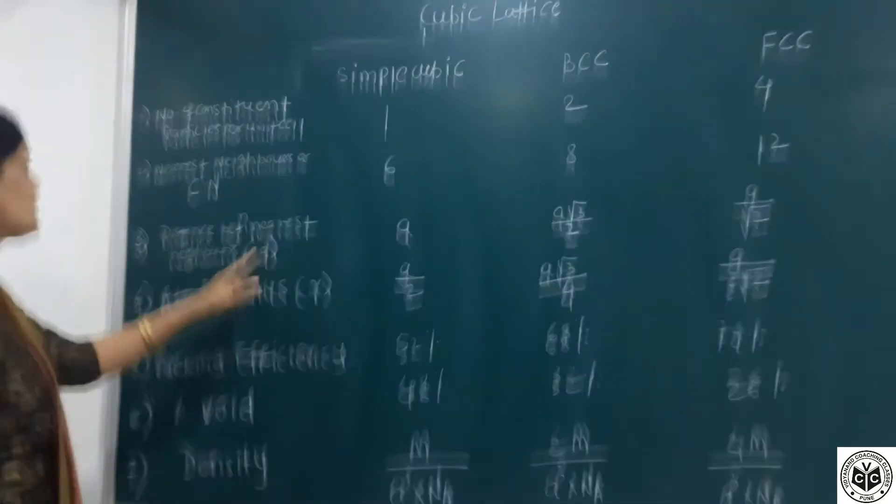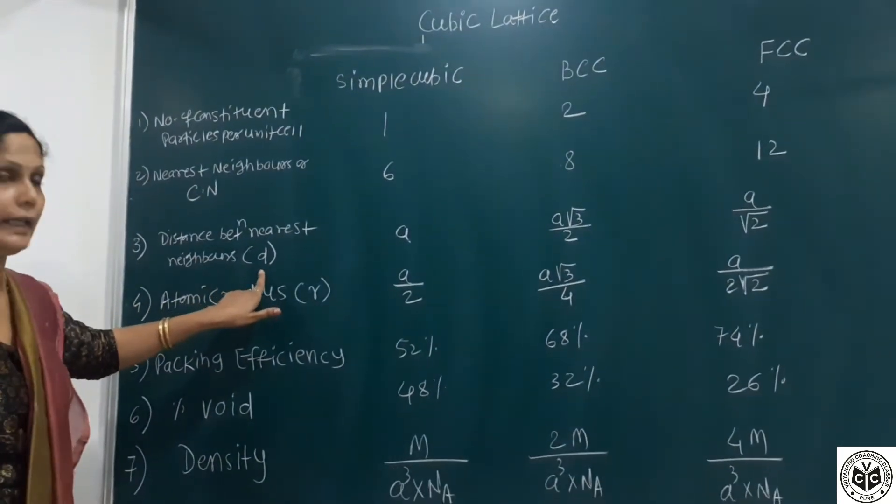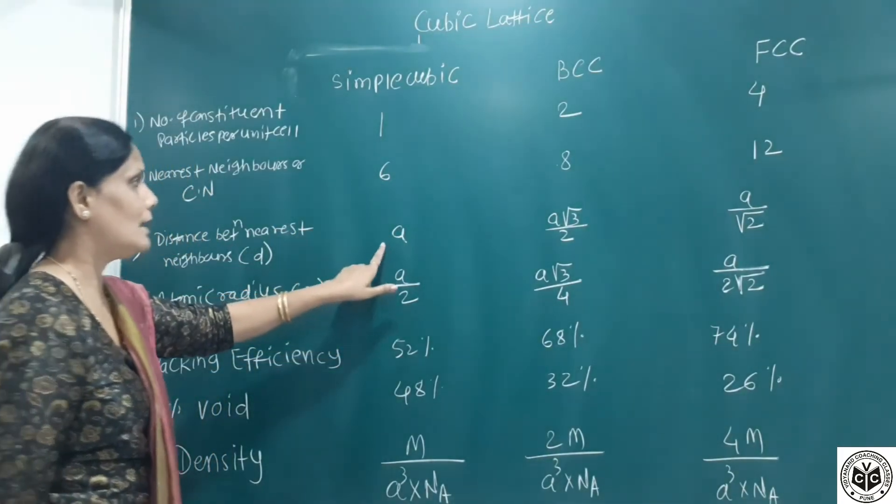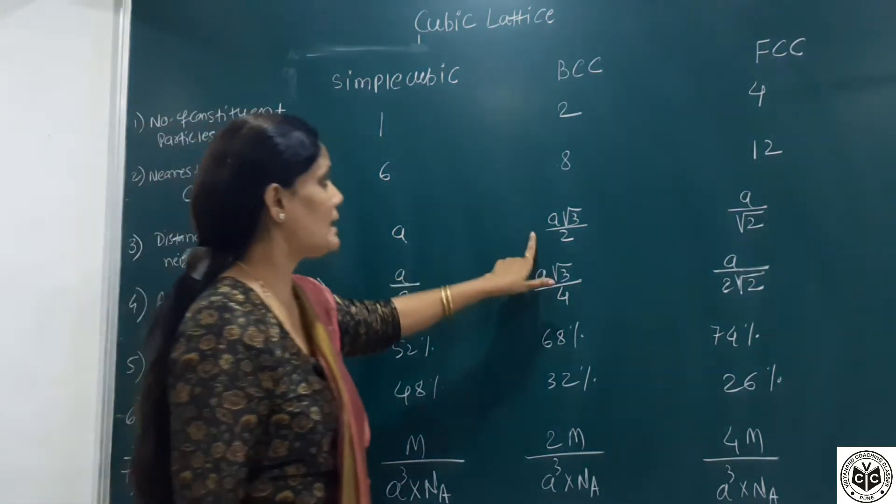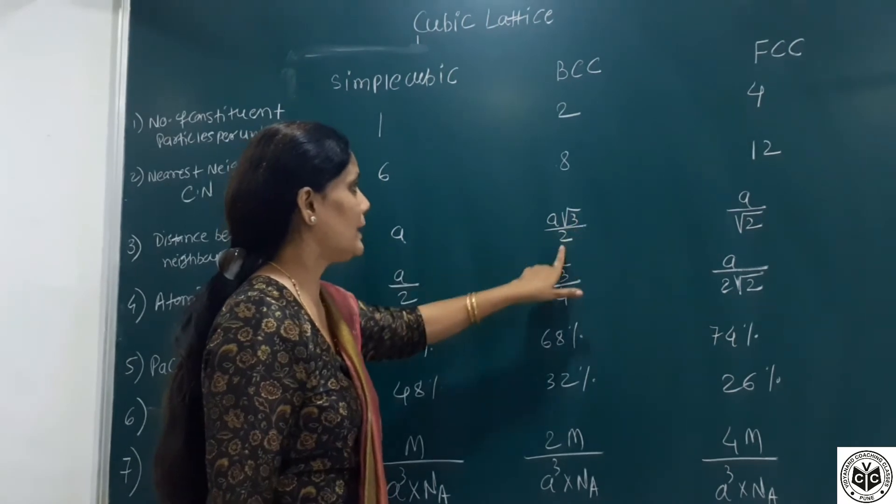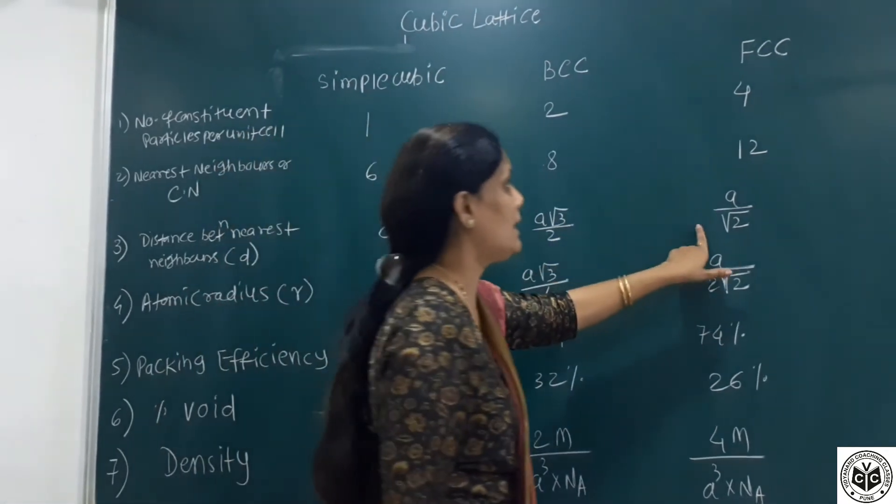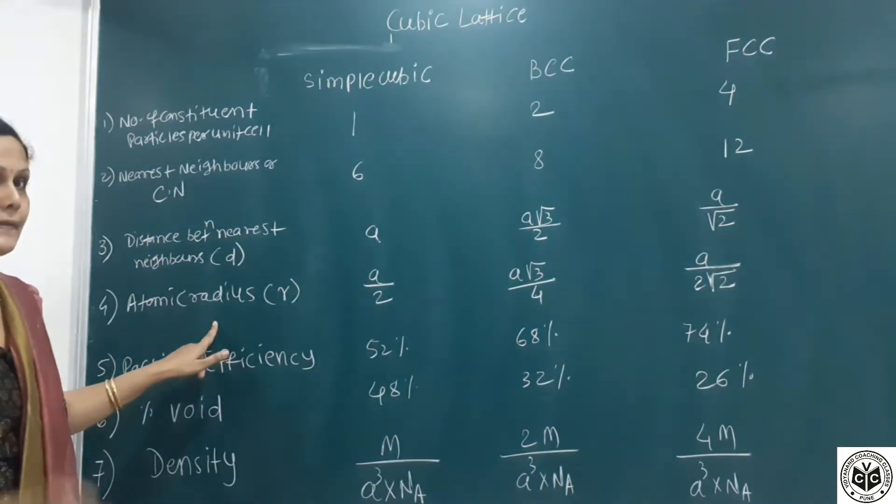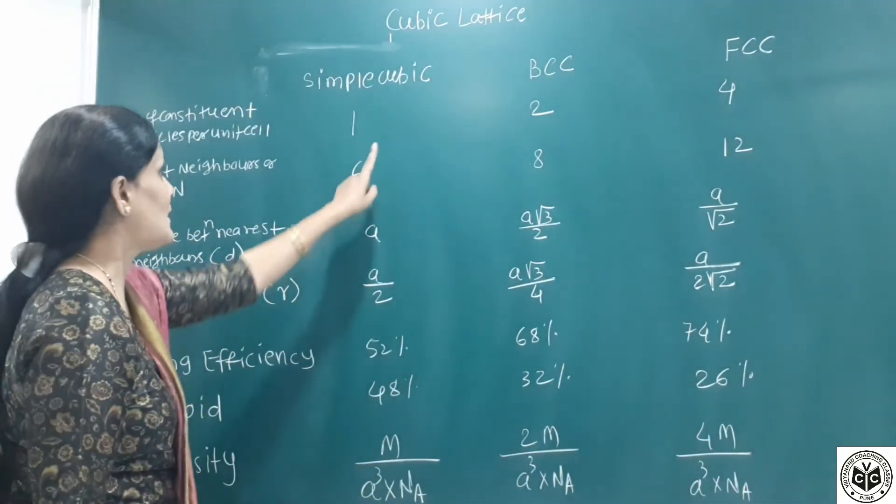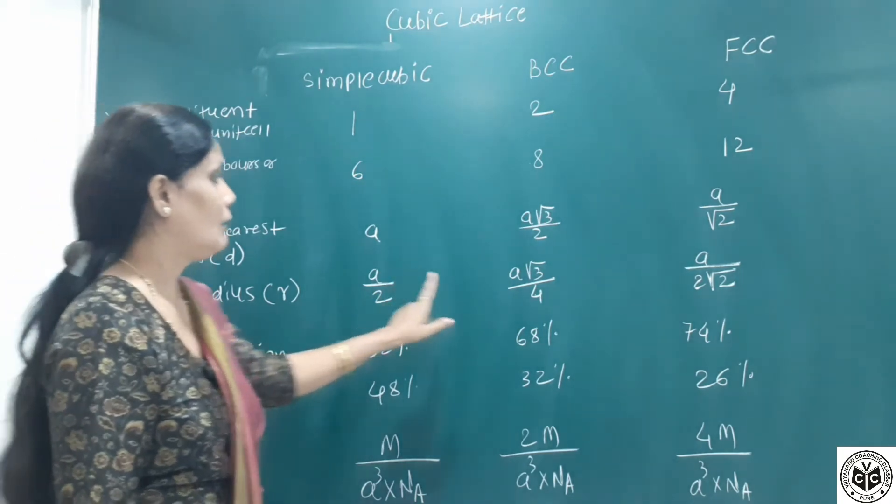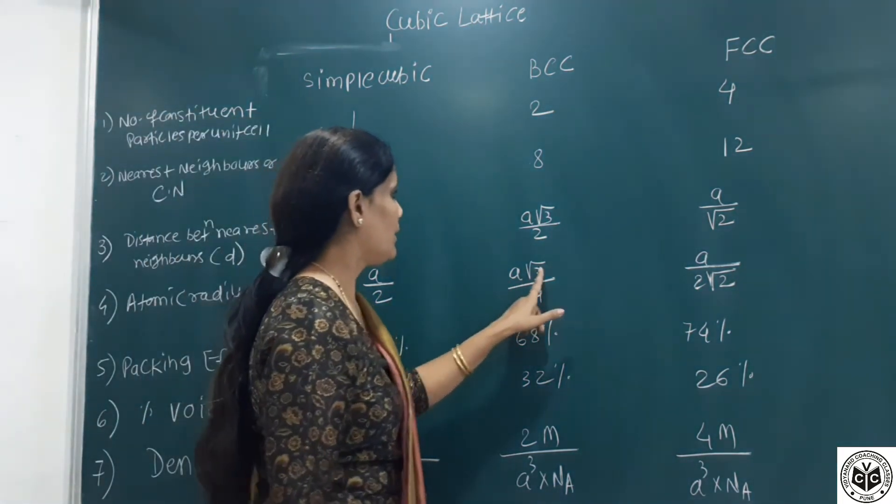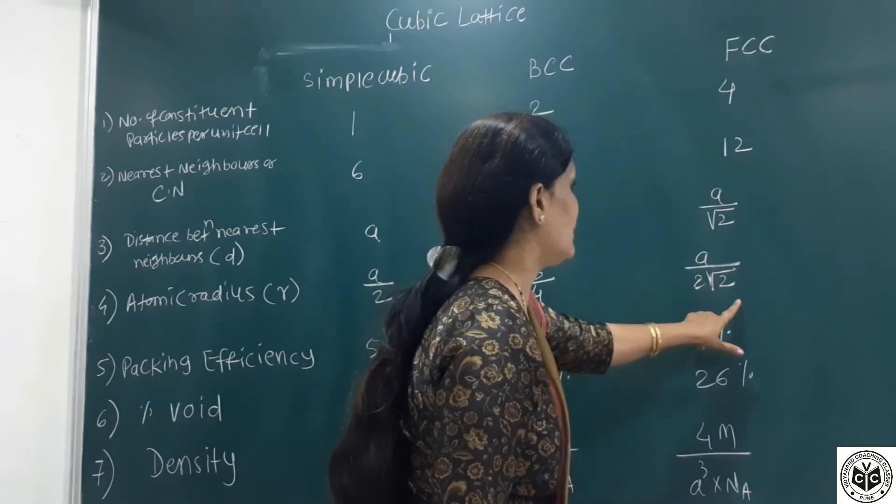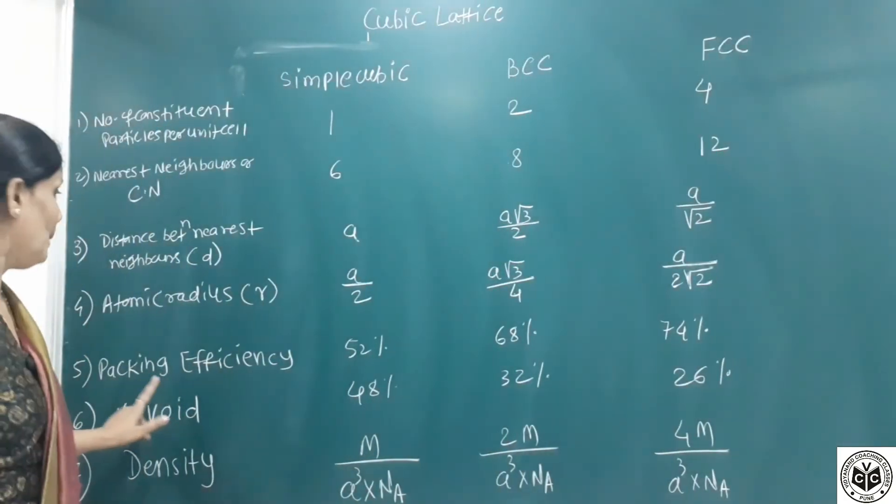Distance between nearest neighbors D: in simple cubic it equals A. For BCC, A times square root 3 divided by 2. For FCC, A divided by square root 2. Atomic radius R: for simple cubic A by 2, for BCC A times square root 3 by 4, and for FCC A divided by 2 square root 2.